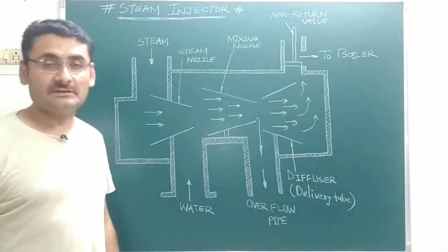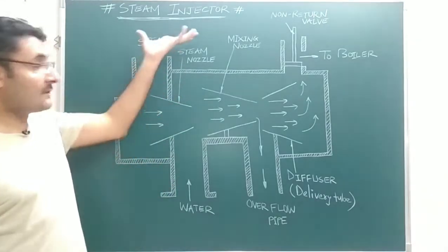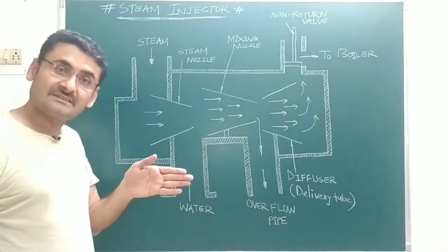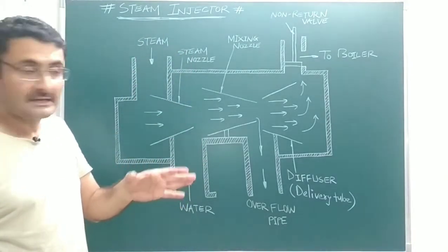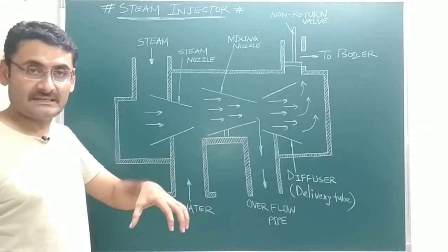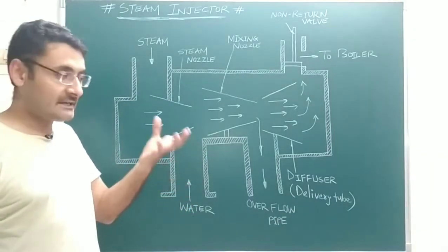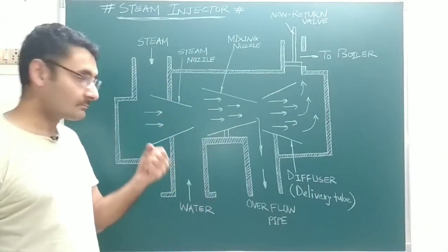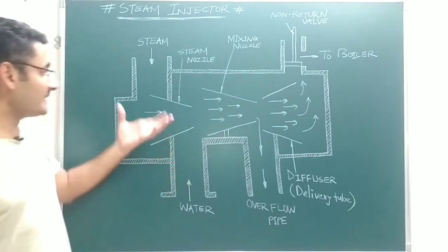Because the steam injector saves power, it increases the efficiency of the boiler. This type of steam injector is used for vertical axis boilers or locomotive boilers — both of which have low capacity. So steam injectors are applicable only when the capacity of the power plant is low.